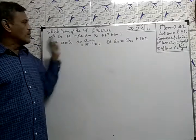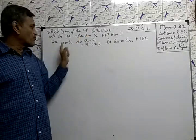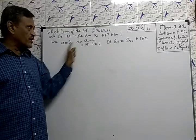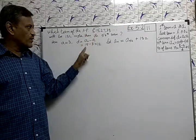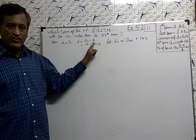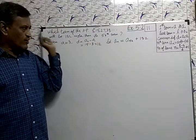Here, first term is 3, A equal to 3. Common difference, I am subtracting 15 minus 3, 12. Second term minus first term, common difference 12 we got.